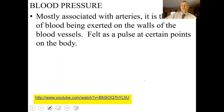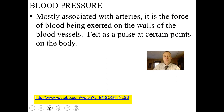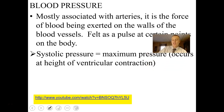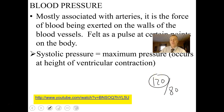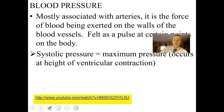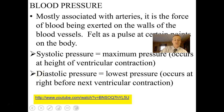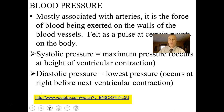Blood pressure is mostly associated with the arteries — it is the force of blood exerted on the walls of blood vessels and is felt as a pulse at certain points on the body. Systolic pressure (e.g., 120 in 120/80) is the maximum pressure at the height of ventricular contraction. Diastolic pressure is the lowest pressure that occurs right before the next ventricular contraction.